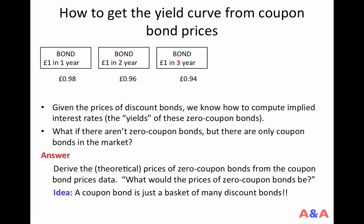The answer is that we can derive the theoretical prices of zero-coupon bonds if we know the prices of coupon bonds. That is, we can determine what the prices of zero-coupon bonds would be, as long as we have coupon bond price data. The main idea is that a coupon bond can be regarded as a basket of many discount bonds.